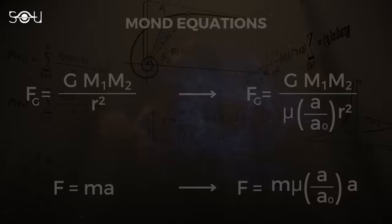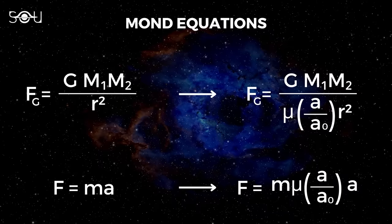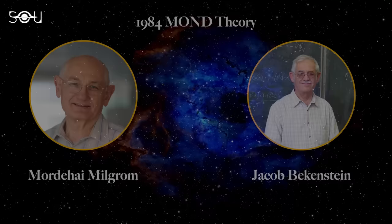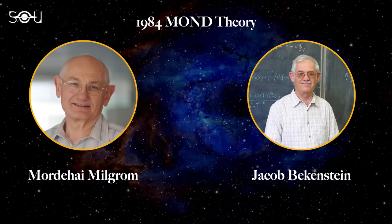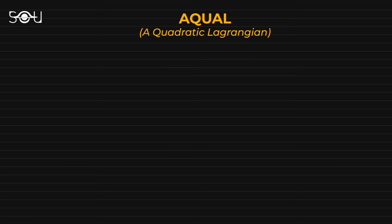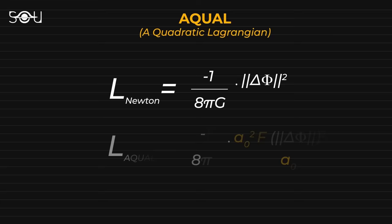MOND assumes a threshold acceleration below which there is a transition from Newtonian dynamics to MOND regimes. Based on this idea, a generalized theory was constructed by Milgrom and Jacob Bekenstein in 1984. It is called AQUAL, which stands for A Quadratic Lagrangian. This theory modified Newtonian gravity by changing the classical Lagrangian to a Lagrangian involving a general function and the threshold acceleration term.